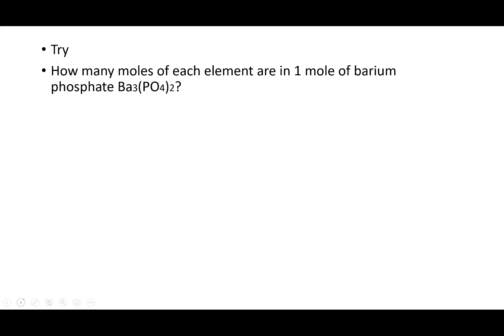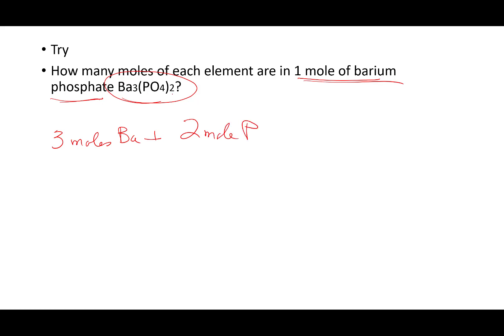Hit pause for 15 seconds and try this: if I've got a mole of barium phosphate, how many moles of these individual elements do I have? If I have one mole of barium phosphate, that means I have three moles of barium, plus two moles of phosphorus — because two times everything in parentheses — plus eight moles of oxygen. Two times four is eight. Those are the individual pieces that make up that whole.